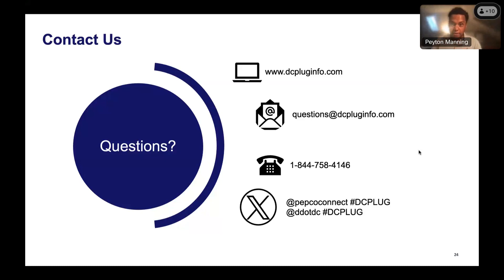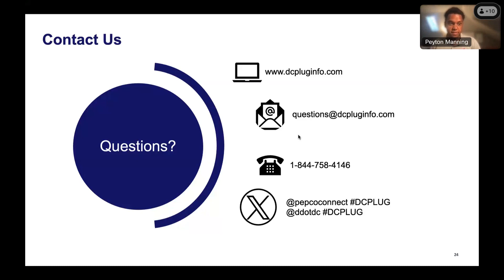If you have any questions, please send them in the chat or Q&A box, raise your hand, or press star 3 if calling in. You can follow the project at www.dcpluginfo.com — go to Ward 3 and select your feeder. This presentation will be posted within about 72 hours. You can also sign up for the listserv. For questions, email questions@dcpluginfo.com or call the 24-hour hotline at 1-844-758-4146.